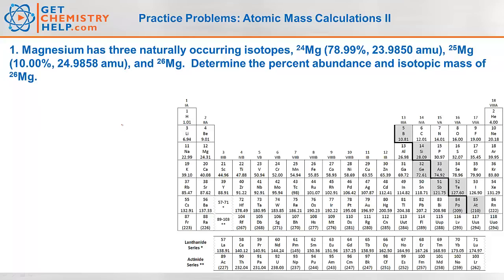Well hello and welcome to GetChemistryHelp.com. My name is Dr. Kent and in this video I'm going to work a few more practice problems on atomic mass calculations. But instead of just solving for the average atomic mass as we did in our previous lesson, now we're going to do some more advanced calculations and we're going to solve for the abundance and the isotopic mass of various individual isotopes. If you haven't yet watched our previous videos including the lesson on atomic mass as well as atomic mass calculations part one, I suggest you watch those first.